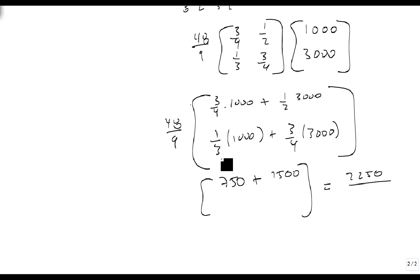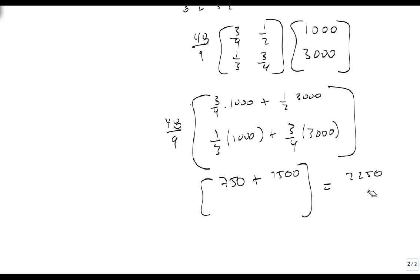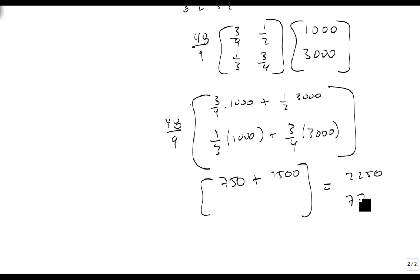And this one's going to be a little bit trickier, I'm just going to get the calculator out. 1,000 divided by 3, plus 3 divided by 4 times 3,000 is 2,583. Let's times that by 3, so 7,750 over 3. And that's still being times by the 48 over 9.